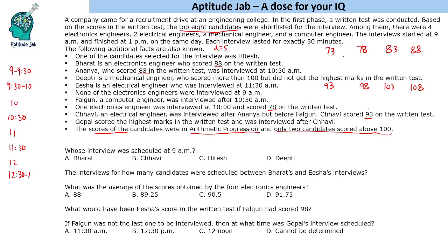Now we will map the scores with the candidates, their category, and their interview time. One of the candidates is Hitesh. The names appear to be A through H. Bharat is an electronics engineer who scored 88 in the written test.